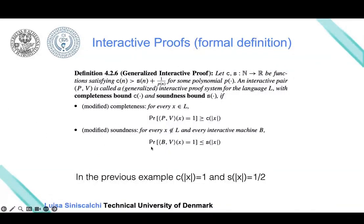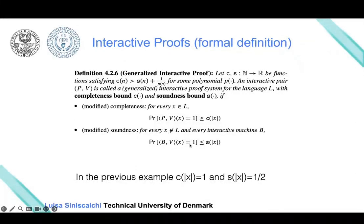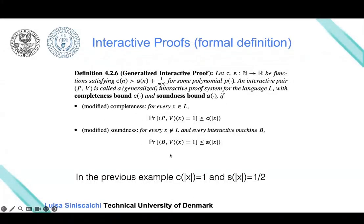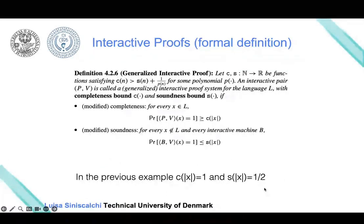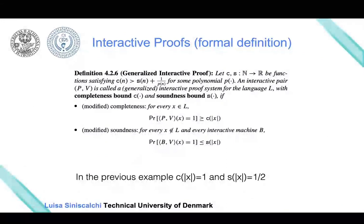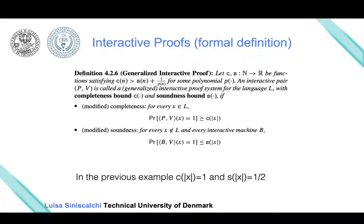The soundness property protects the verifier from a malicious prover who, when interacting with the verifier, wants to prove a false theorem that would make the verifier accept. We say this event happens with probability less than S, which in our case was one-half. This is a formal way of defining the interactive proof objects we've been discussing.